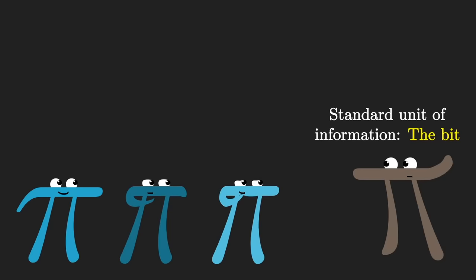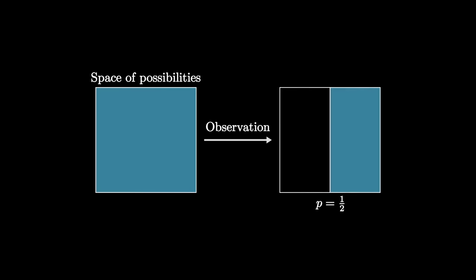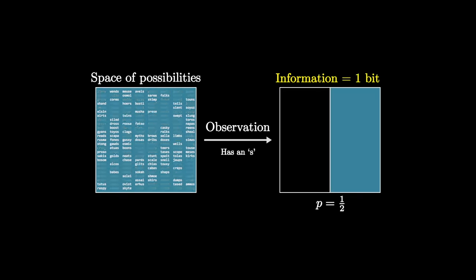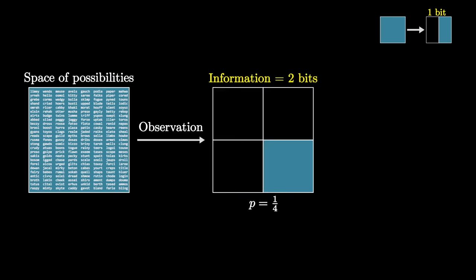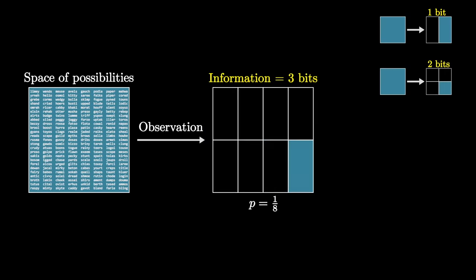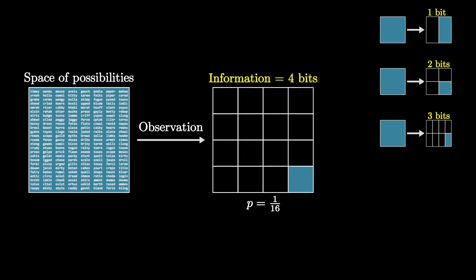The standard unit of information is the bit, which has a little bit of a funny formula, but it's really intuitive if we just look at examples. If you have an observation that cuts your space of possibilities in half, we say that it has one bit of information. In our example, the space of possibilities is all possible words, and it turns out about half of the five-letter words have an S, so that observation would give you one bit of information. If instead a new fact chops down that space of possibilities by a factor of four, we say that it has two bits of information. For example, it turns out about a quarter of these words have a T. If the observation cuts that space by a factor of eight, we say it's three bits of information, and so on and so forth. Four bits cuts it into a 16th, five bits cuts it into a 32nd.